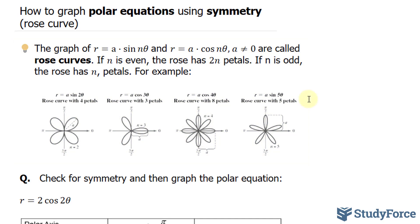Examples of rose curves are shown here. The n value of this equation is 2. 2 is even, so you take 2 times 2, and that's why you have 4 rose petals. In our case here, we have 3. 3 is odd, so you get 3 rose petals, and so on.